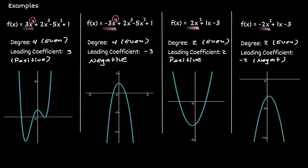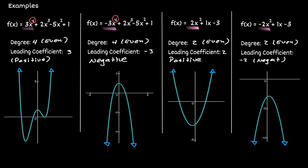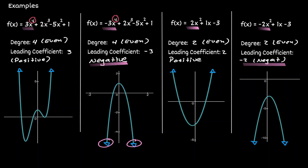One thing we can notice is that within these functions, the end behaviors are always either both facing up or both facing down. Notice that here both of them are facing up, and notice that here both of them are facing down. This will always occur when your degree is an even number, regardless of what that number is. If the degree is even, the end behaviors are always either both facing up or both facing down. What determines if it's facing up or facing down is the sign of the leading coefficient. Where the leading coefficient was positive, end behaviors were always facing up. And if the sign of the leading coefficient was negative, end behaviors were both facing down.